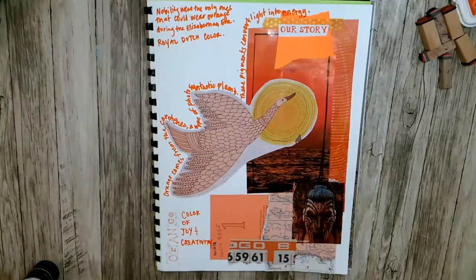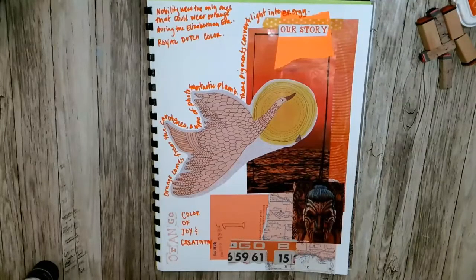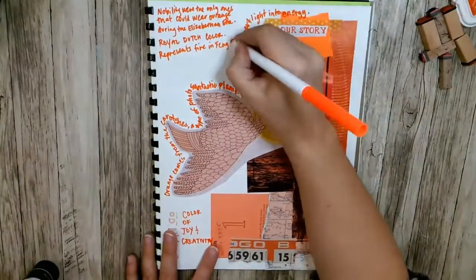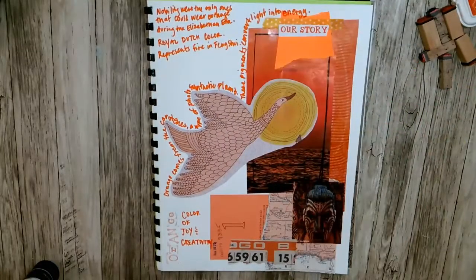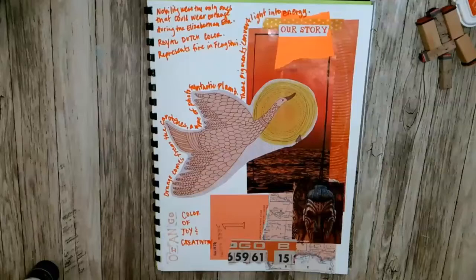And so in the end you should have your facts in your negative space and your collage of at least 10 different pieces of paper with your color and the word. Okay, that's the project and I hope you enjoy it and I will see you in the next video guys, bye bye.